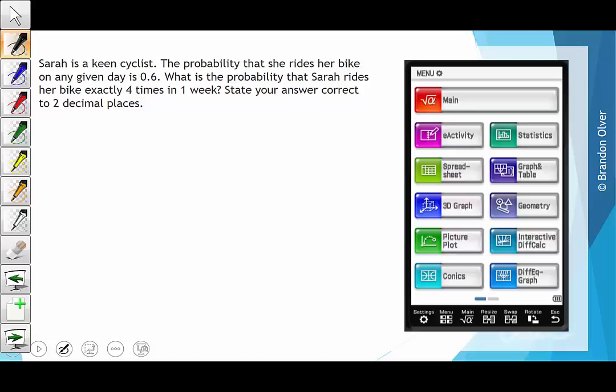Sarah is a keen cyclist. The probability that she rides her bike on any given day is 0.6. What is the probability that Sarah rides her bike exactly four times in one week? State your answer correct to two decimal places.